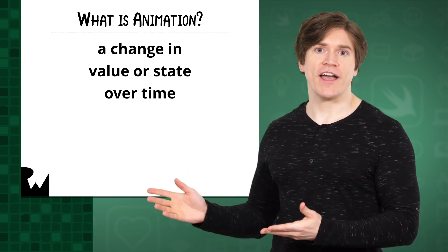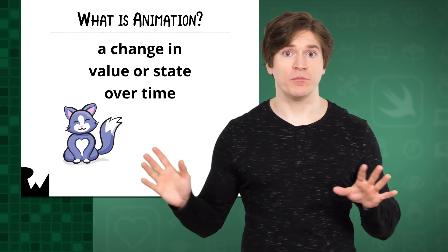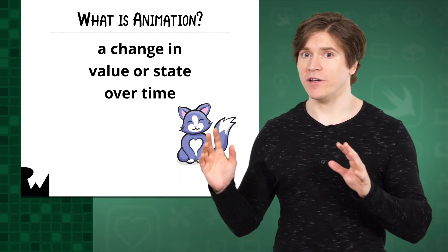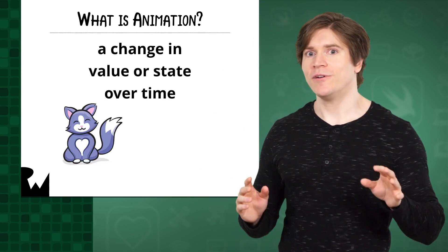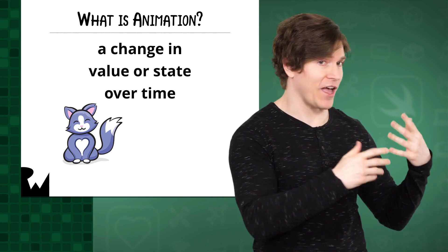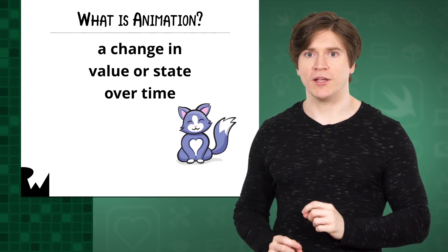That's it. If you take this cat and change its position from point A to point B, it just appears at point B. Technically, that is a very short animation. Now, change the cat's position over a perceivable period of time, like half a second. That's the kind of animation we're talking about.